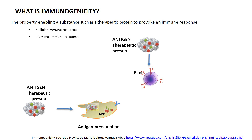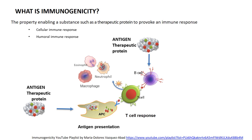The characteristic of these cells is that they can see the whole protein, they can engulf it, and then they can present it to the T cell — but they don't present the whole molecule. They present only the T cell epitope that the T cell will recognize and become activated.